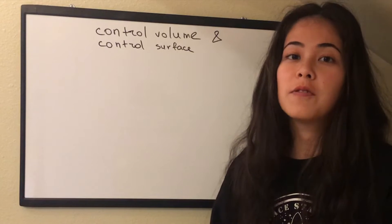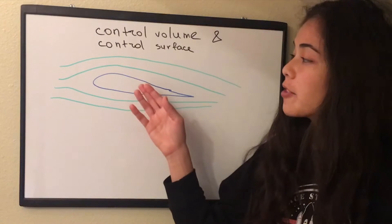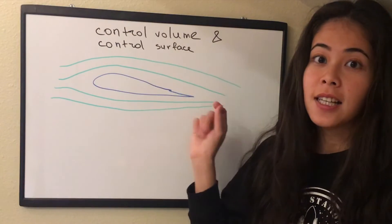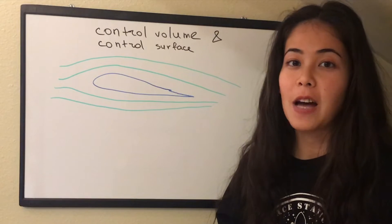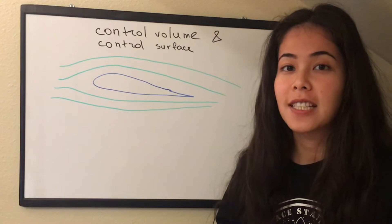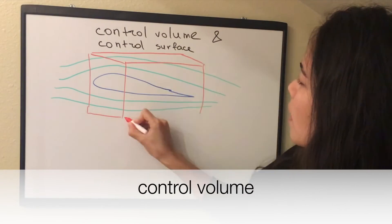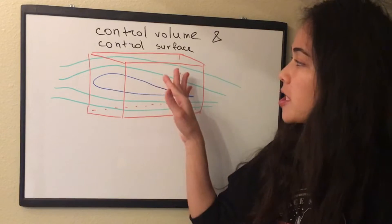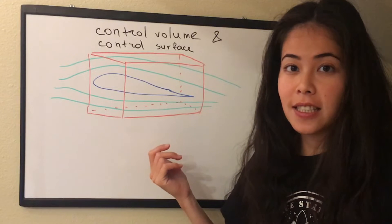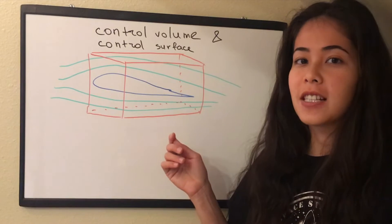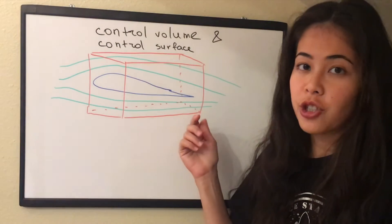Let's say we want to solve some aerodynamics problem. We have the airfoil, the air flow around it, but how can we actually quantify what happens to the airflow? In order to simplify what happens with the airflow, the first aerodynamics scientists invented the concept of a control volume. A control volume is just an imaginary volume that encloses the air in the area you're interested in. In simple terms, you can think of a control volume just as an imaginary box around the airfoil or any other region you are trying to analyze.